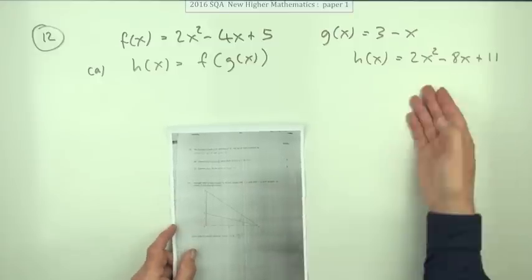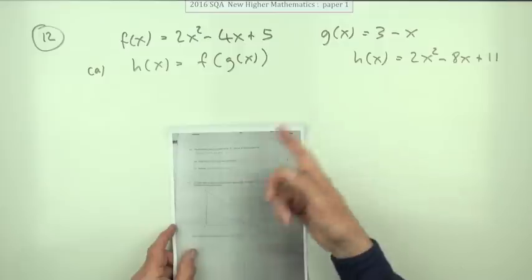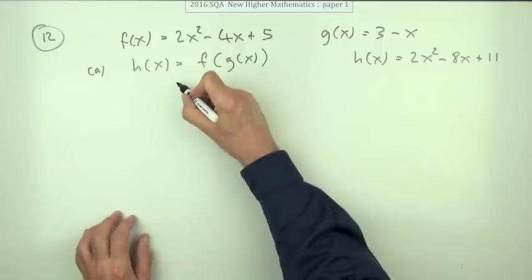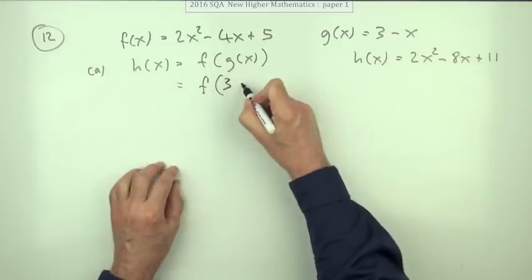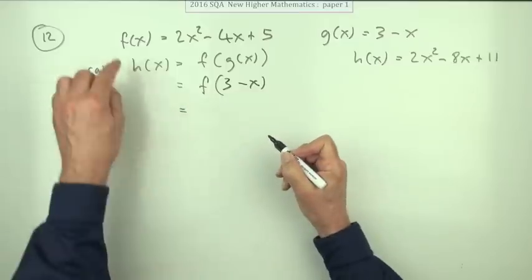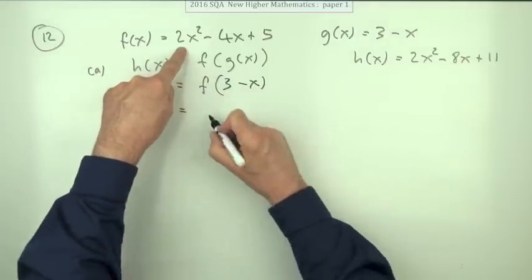That function is acting on g(x), and g(x) produces 3 minus x. This function then takes this and does this to it: takes it, squares it and doubles it, takes away four times it, and then adds on five.